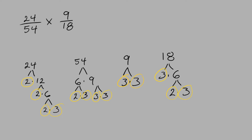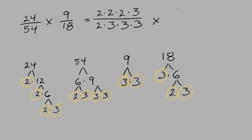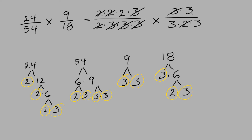Now we can rewrite the question using the prime factors. The 24 is equal to 2 times 2 times 2 times 3, and the 54 is equal to 2 times 3 times 3 times 3. It's multiplied by 9 which is 3 times 3, over 18 which is 3 times 2 times 3. Now we can cancel out any common factors in the numerators and denominators: we cancel a 2, another 2, a 3, another 3, and another 3.